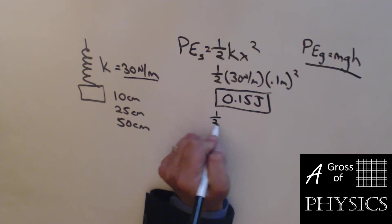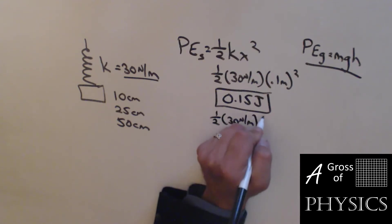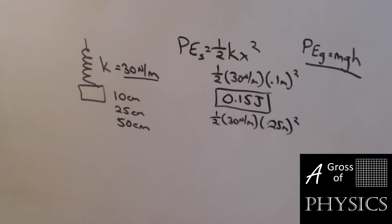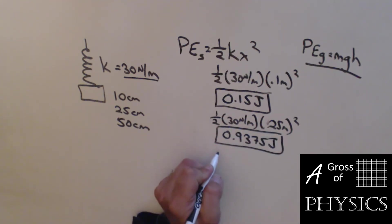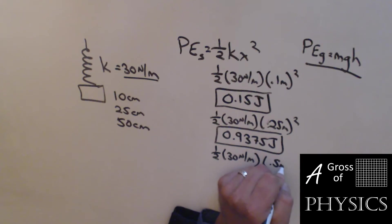If we look at the next value, one-half 30 newtons per meter times 0.25 meters squared, 0.5 times 30 times 0.25 squared yields 0.9375 joules. And then finally, one-half 30, 0.5 meters squared. So 0.5 times 30 times 0.5 squared gets me 3.75 joules.